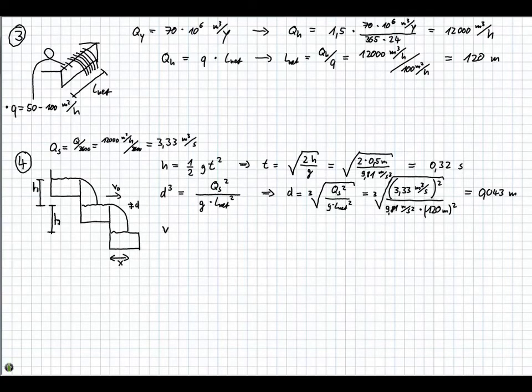Next value we want to calculate is the initial velocity when the water leaves the cascade. This velocity is given by the following formula: qs divided by l net times d. And we know all these values by now. 3.33 cubic meters per second divided by 120 meters times 0.043 meters. So the velocity that the water has is 0.65 meters per second.